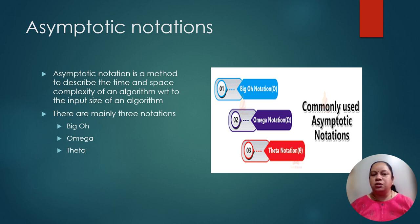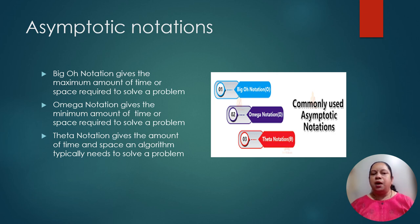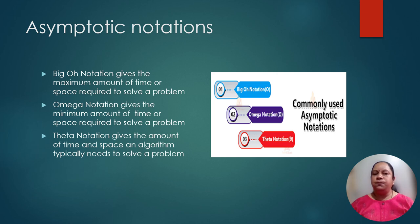Let us understand what these notations are and when they are used. Big O notation gives the maximum amount of time or space required to solve a problem. Omega will give the shortest or minimum time required to solve the problem. And Theta will give the average time required to solve the problem. So to remember: Big O notation gives the maximum time, Omega notation gives the minimum time, and Theta notation gives the average time.